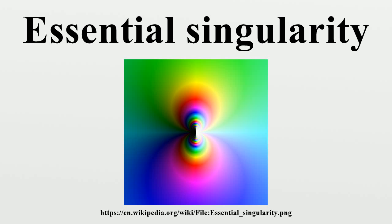The behavior of holomorphic functions near their essential singularities is described by the Casorati-Weierstrass theorem and by the considerably stronger Picard's great theorem. The latter says that in every neighborhood of an essential singularity A, the function F takes on every complex value, except possibly one, infinitely many times.